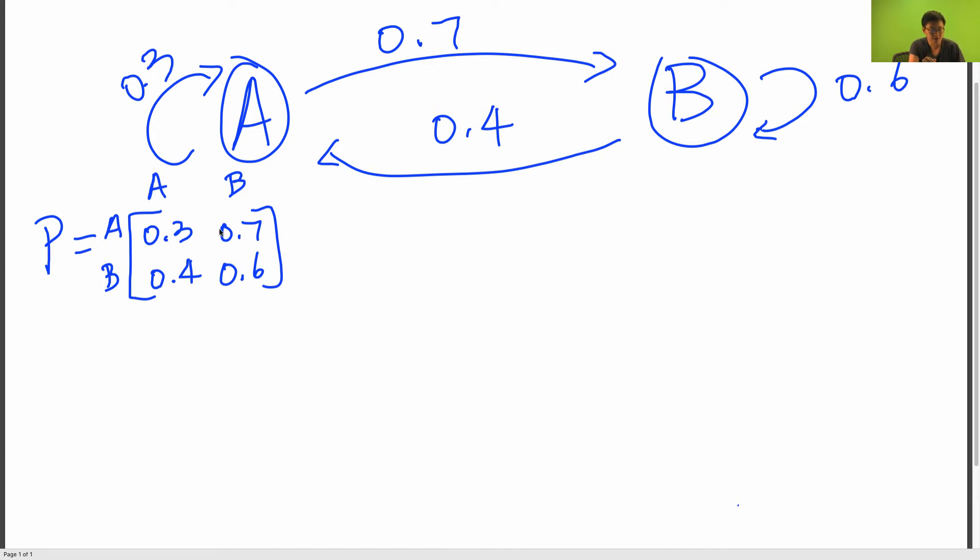And just a quick sanity check to make sure that your transition matrix is correct is to check that the rows sum to 1. So in this case 0.3 plus 0.7 is 1 and 0.4 plus 0.6 is also 1.